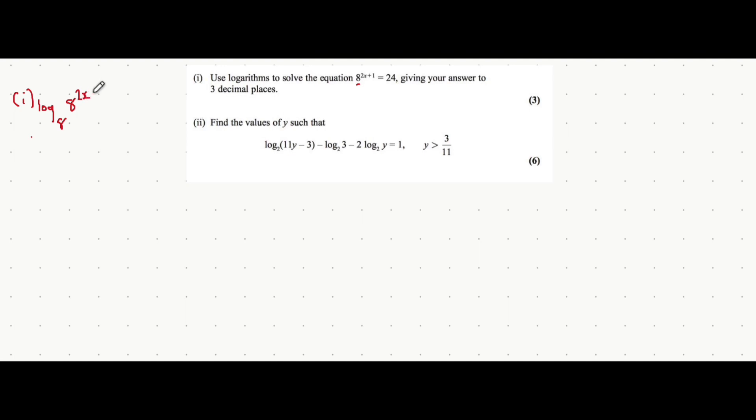So let's now apply that log base 8 to both sides of the equation. So we have log base 8 of everything on the left-hand side equals log base 8 of 24. Like I mentioned before, we can take the power down as a coefficient now. So we have 2x plus 1 all multiplied by log base 8 of 8 is equal to log base 8 of 24.